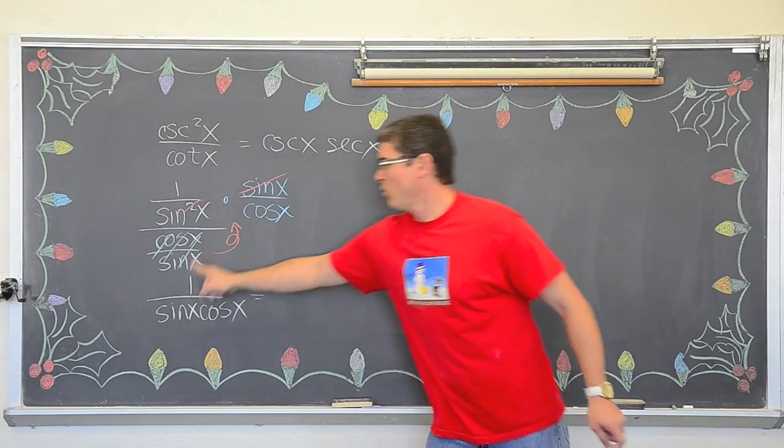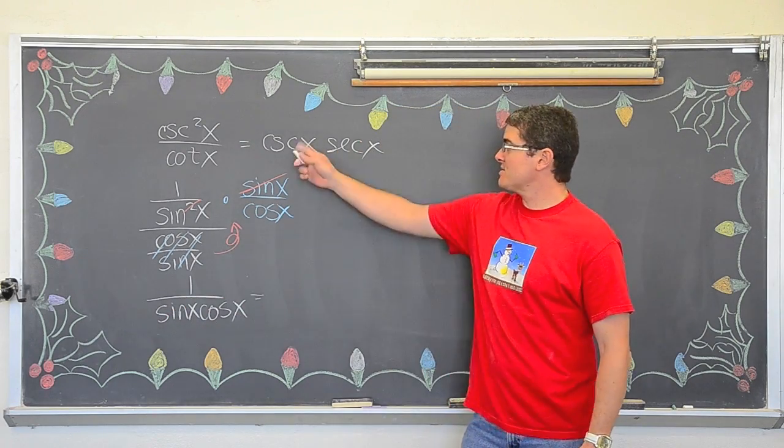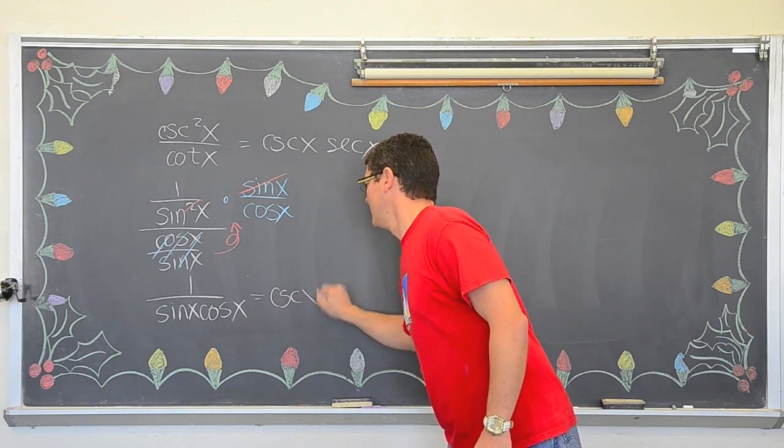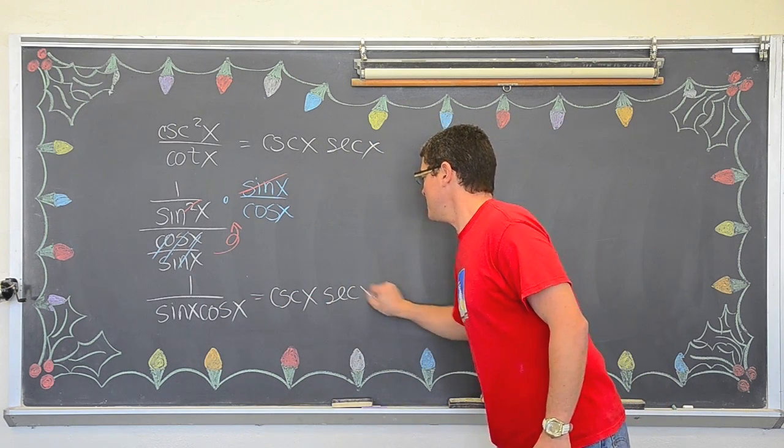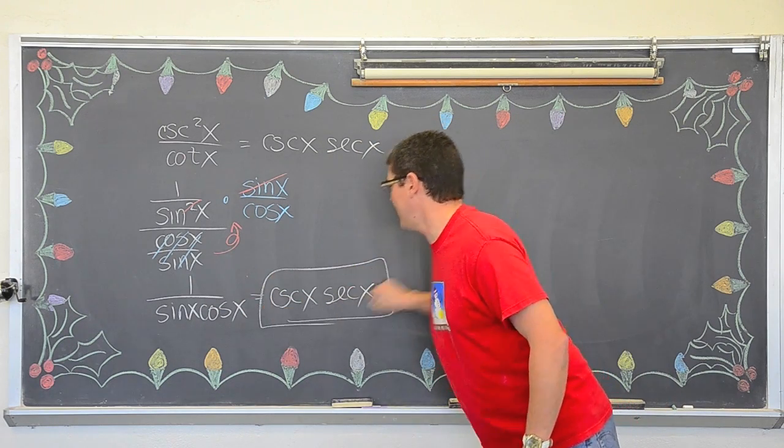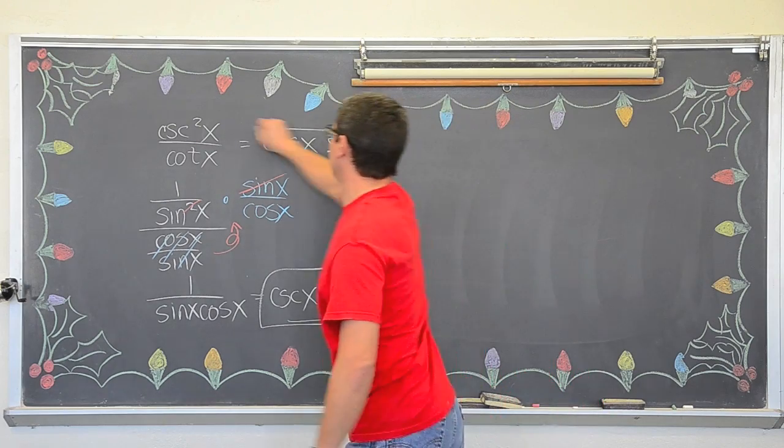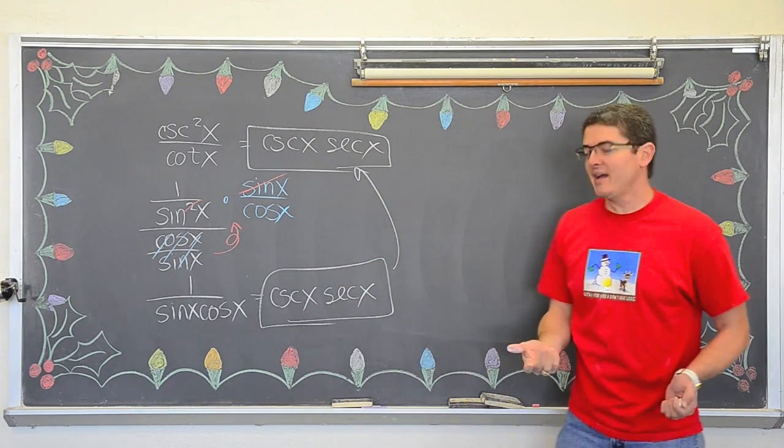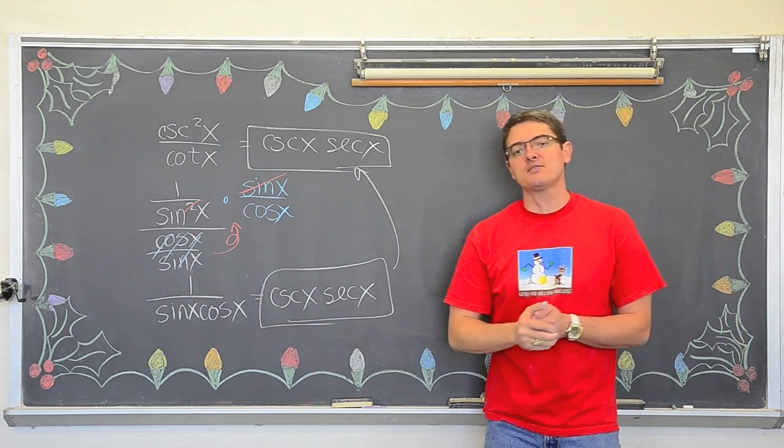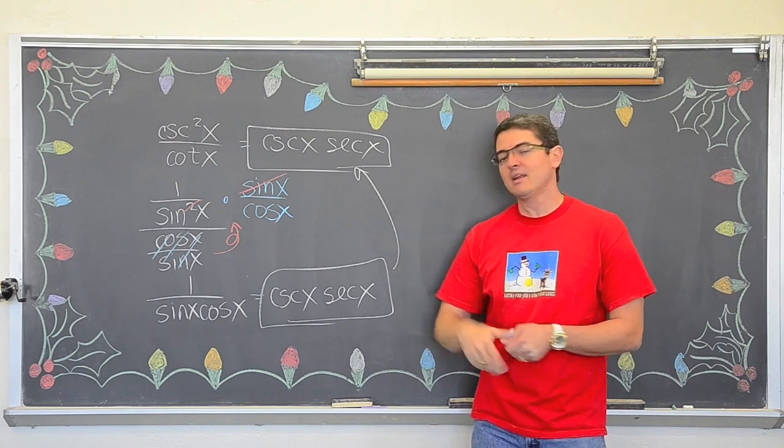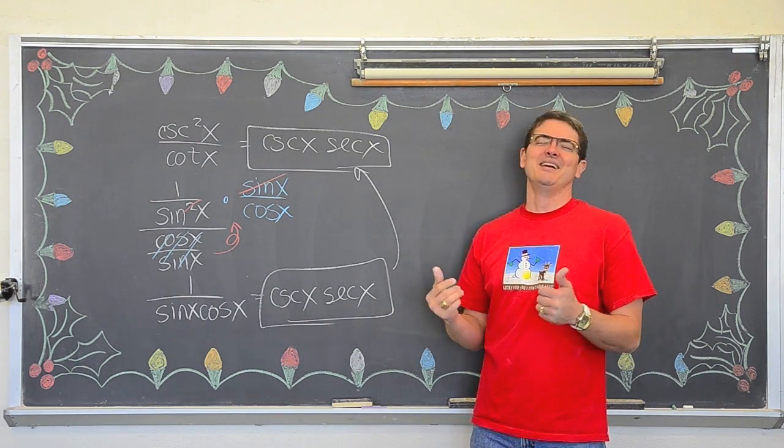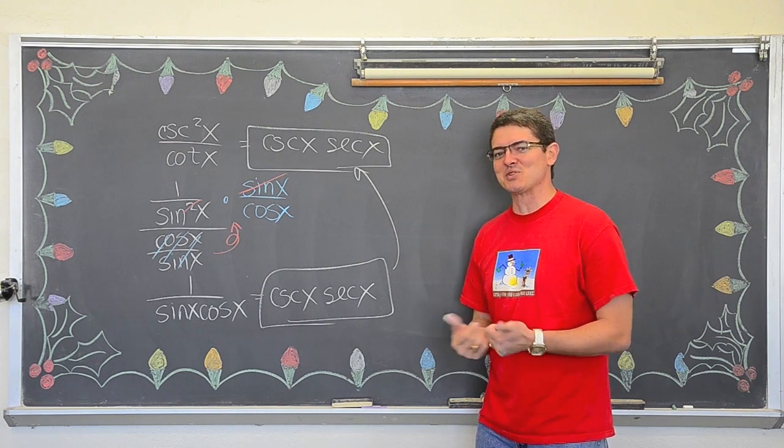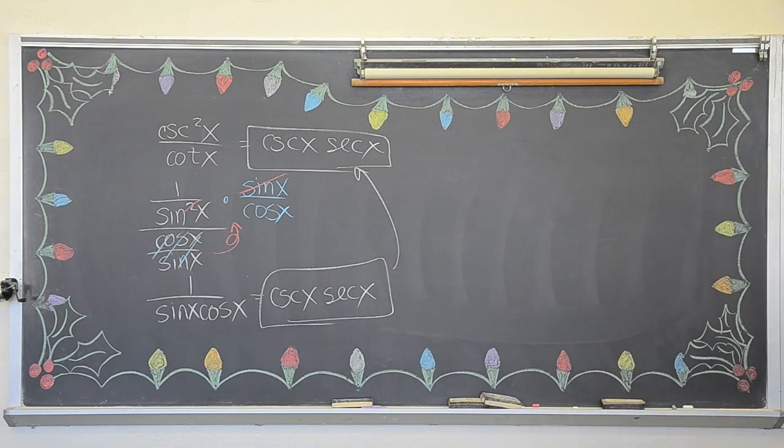And one over cosine is secant. So, BAM! Look at that! We only worked with the left hand side, and we got it to perfectly match the right hand side. And I hear my alarm going off, so that means I am getting close to being out of time. Sign me up or look me over for, uh, look me over? How about check out part two where we do some more examples. BAM! Mr. Tarrou, go do your homework.